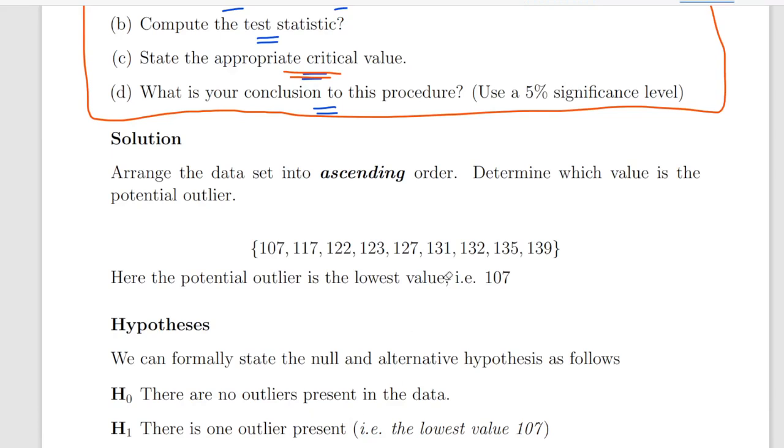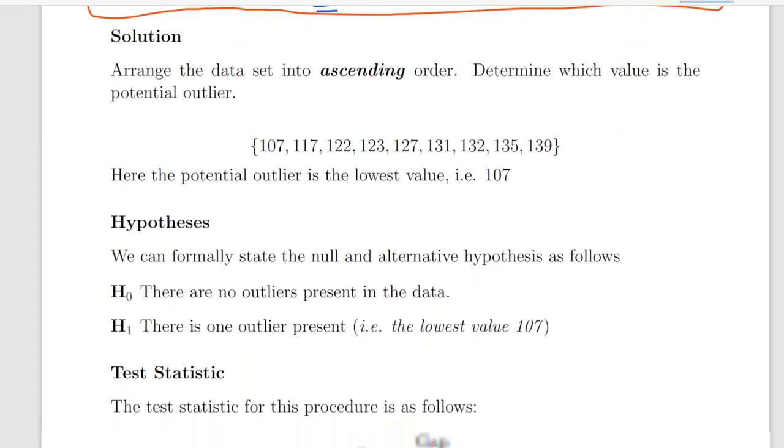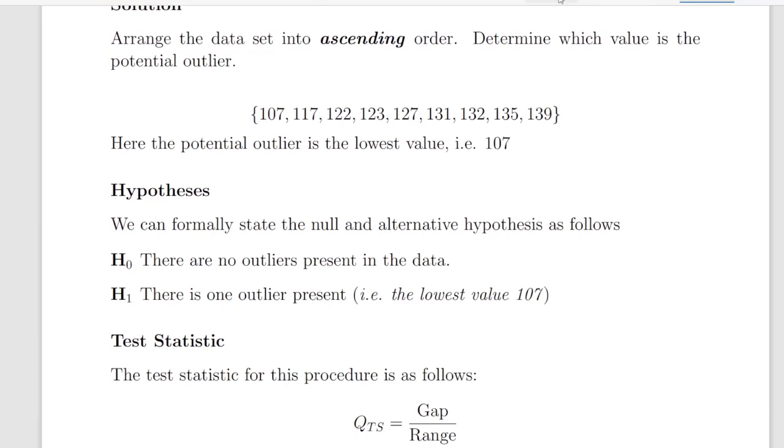The first thing we're going to do is arrange the data into ascending order. So there we have the data from lowest value to highest value. Just as a quick remark, there are actually nine items. And that means that we're going to state 127, which is the fifth item in the overall ranking, as the median.